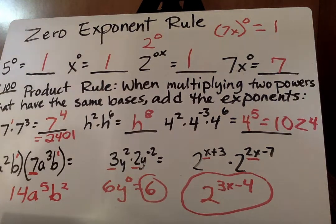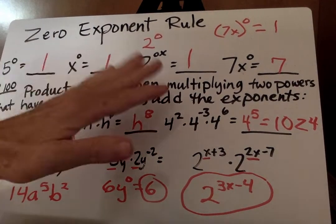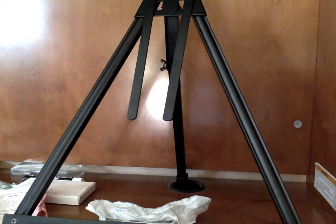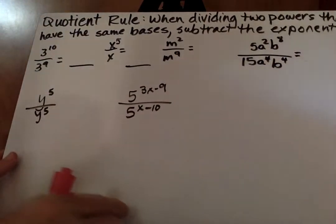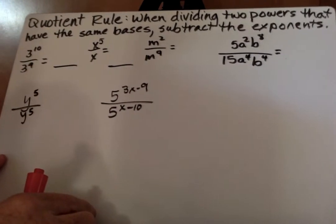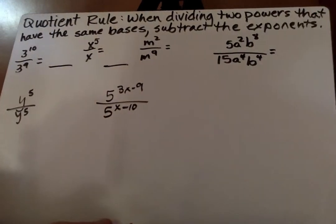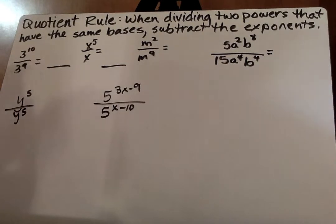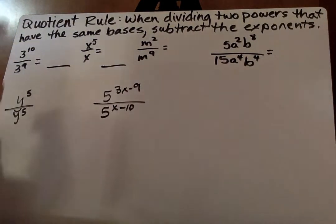All right. There's the product rule again and the 0 rule. Then we go on to the quotient rule, which means when we're dividing two powers, we're going to be subtracting the exponents.